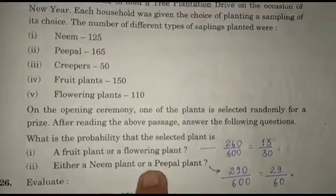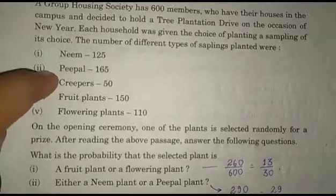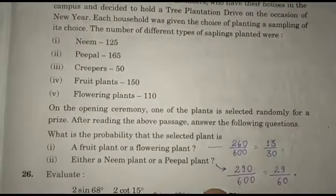Part (ii): Either a neem plant or a peepal plant. Neem is 125 and peepal is 165. We add them to get 290/600 = 29/60.